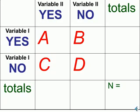Each of the four cells has a name: A, B, C, or D.